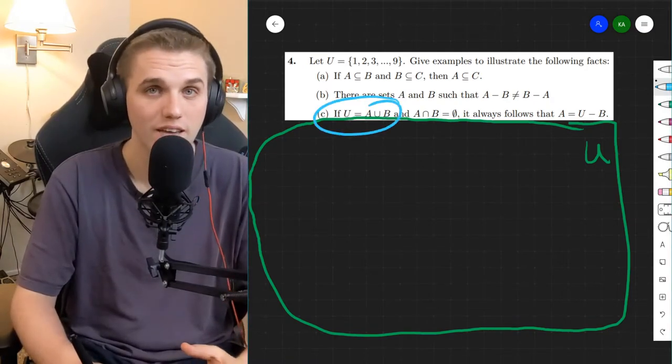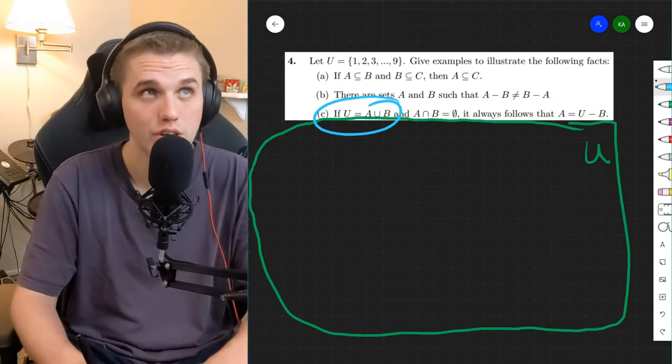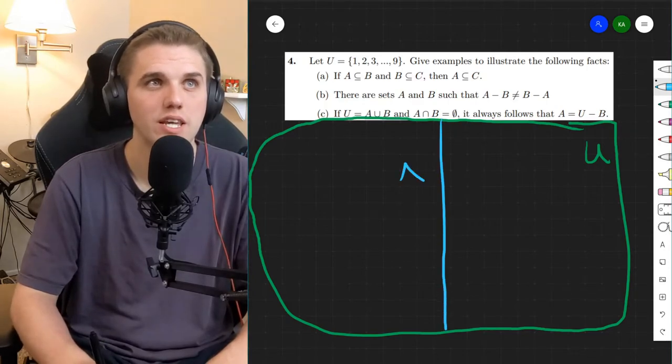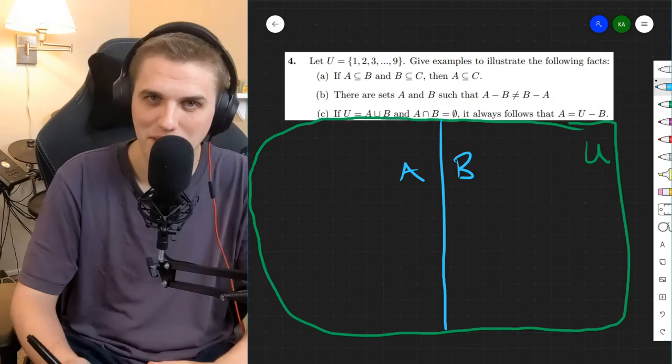So what does it mean that the universe is A union B? Well, that means that if I combine everything in A and combine everything in B, then I have my whole universe. So does that mean that I can split this up into A and B like this? Well, not quite. Let me explain.